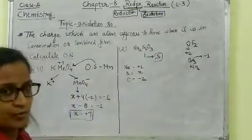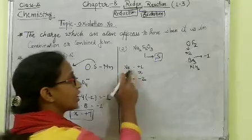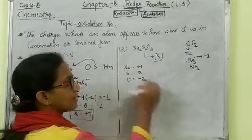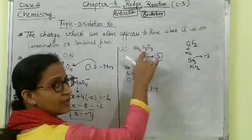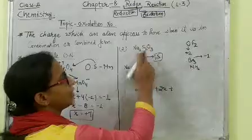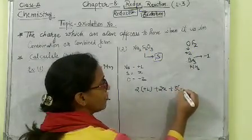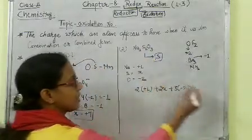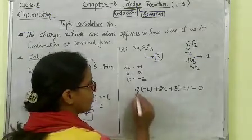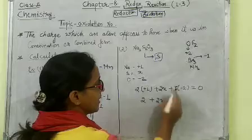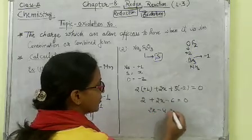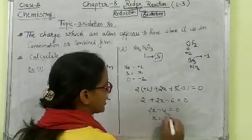Now, for Na2S2O3: 2 sodium atoms carry plus 1 each, giving 2 multiplied by plus 1. There are 2 sulfur atoms with oxidation number X, giving 2X. There are 3 oxygens each carrying minus 2, giving 3 multiplied by minus 2. The total charge on the compound is 0. So: 2 plus 2X minus 6 equals 0, therefore 2X equals 4, and X equals plus 2.